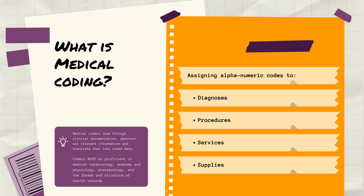The providers don't always speak in coding terms — they speak in clinical terms, and your job as a coder is to take that clinical terminology and turn it into coded data. In order to do that, you must absolutely be proficient in medical terminology, anatomy and physiology, pharmacology, and the format and structure of health records. If any of those are areas you struggle with, it would be important to brush up your skills before you pursue medical coding.